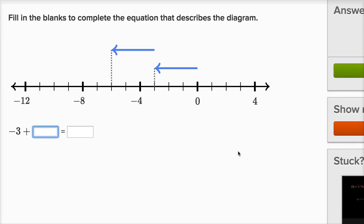Fill in the blanks to complete the equation that describes the diagram. So we're starting at zero, we go three to the left of zero, that's negative three, and then we go another three to the left of that.